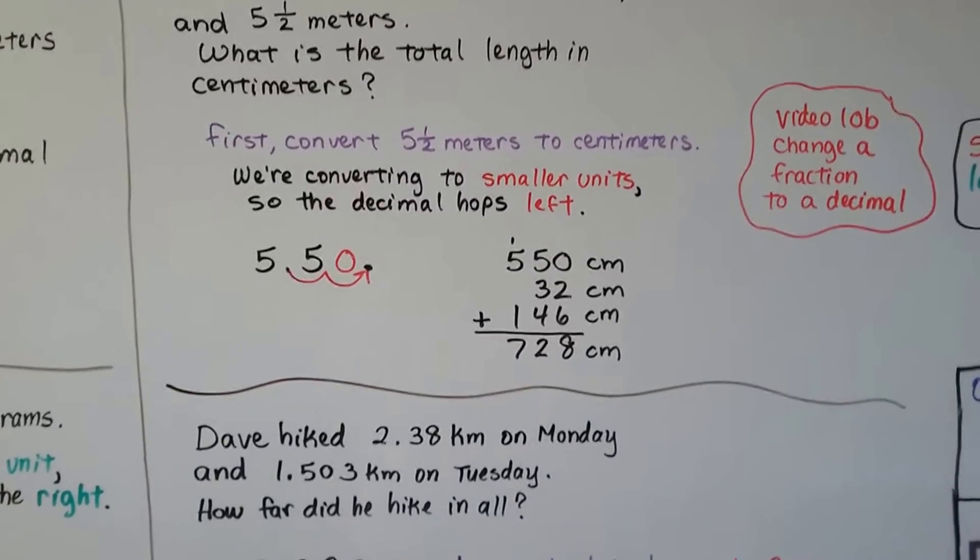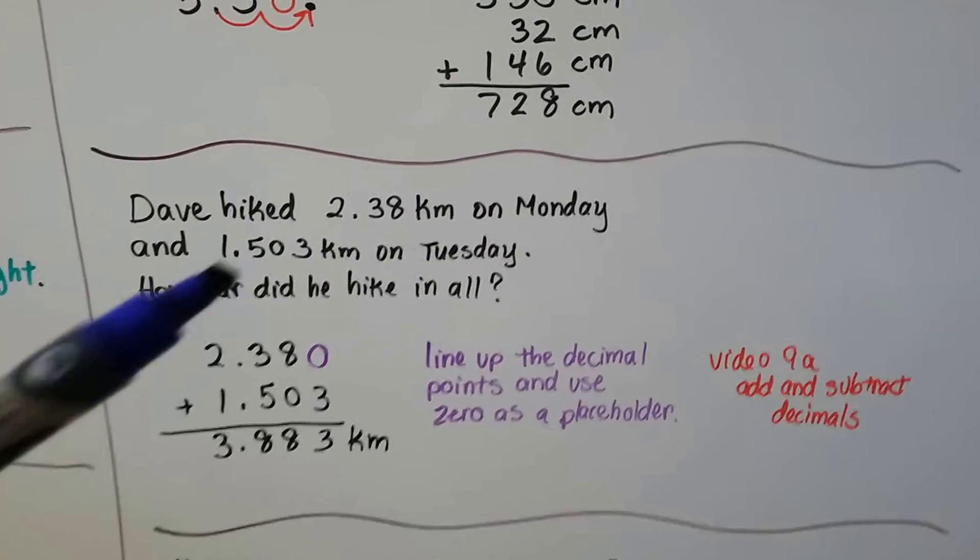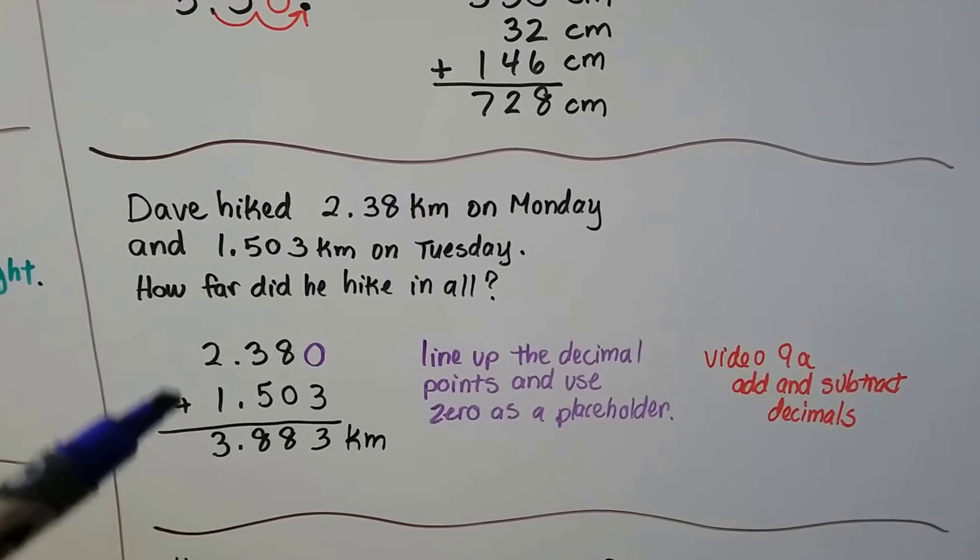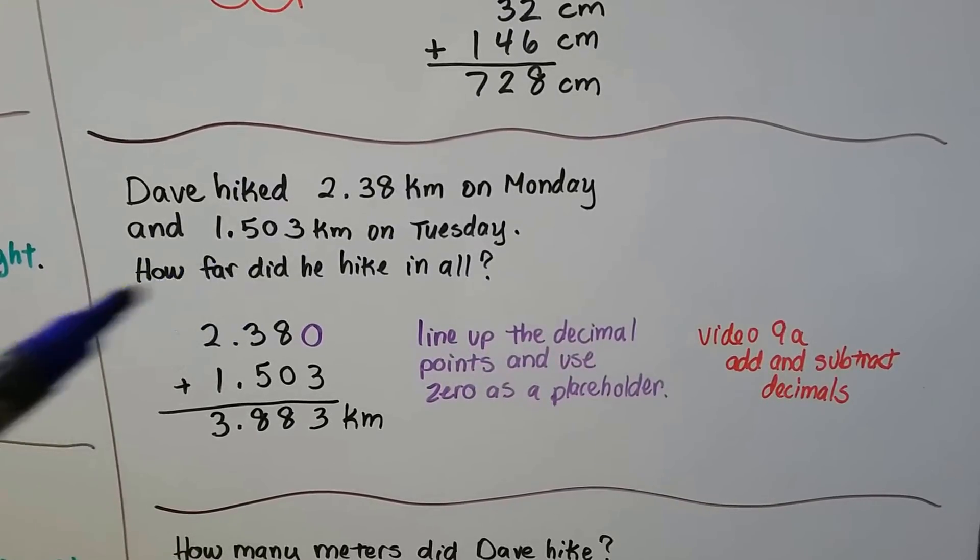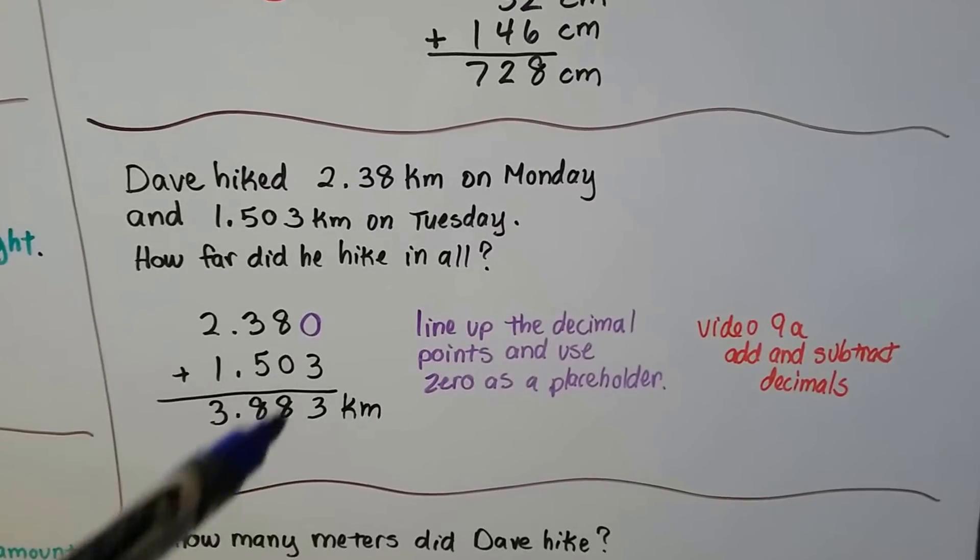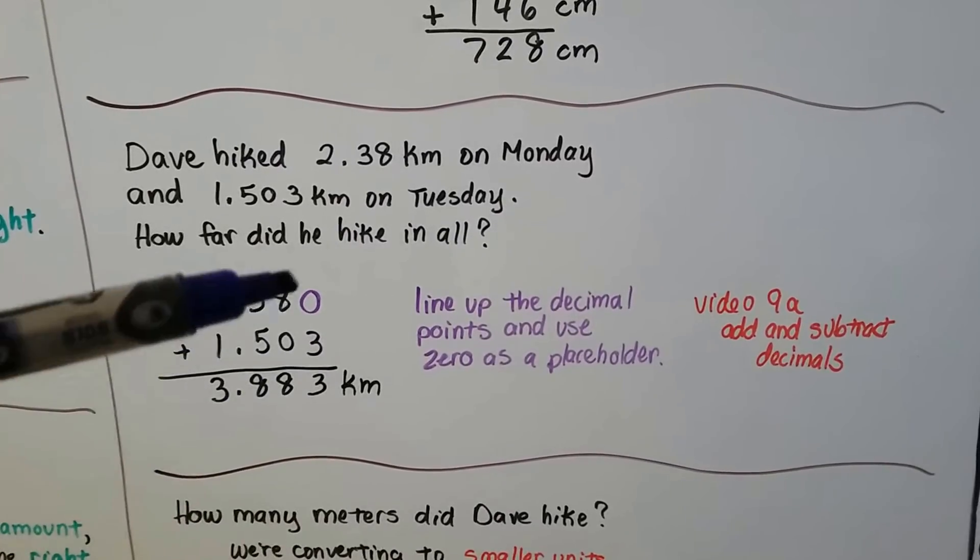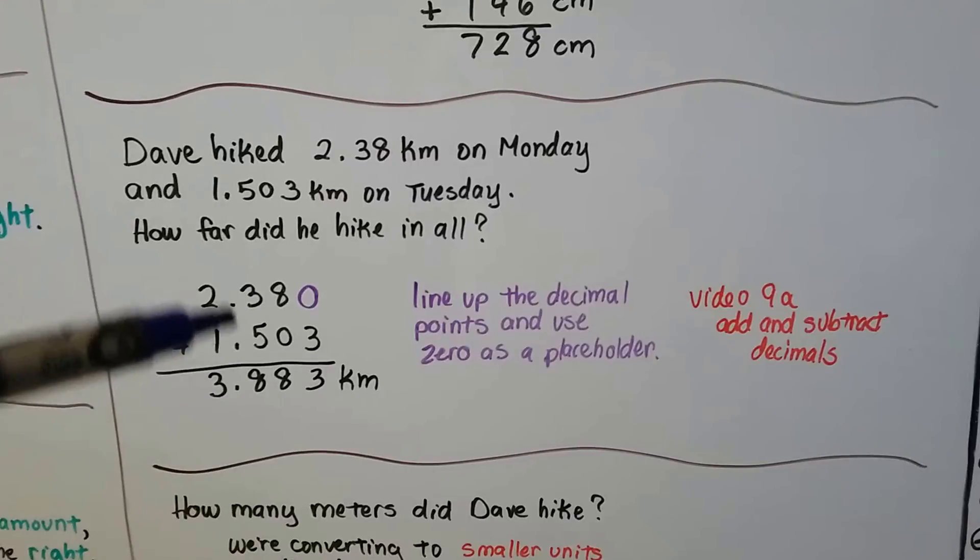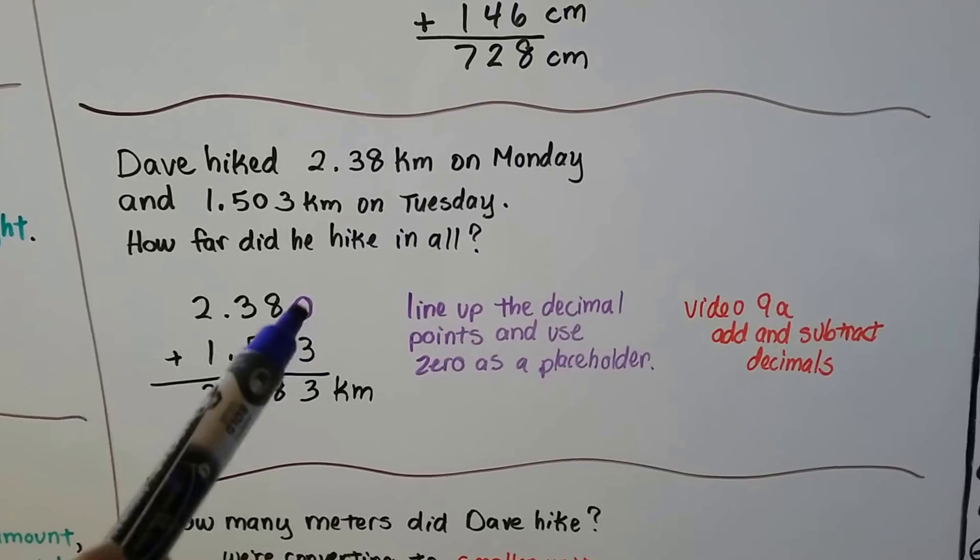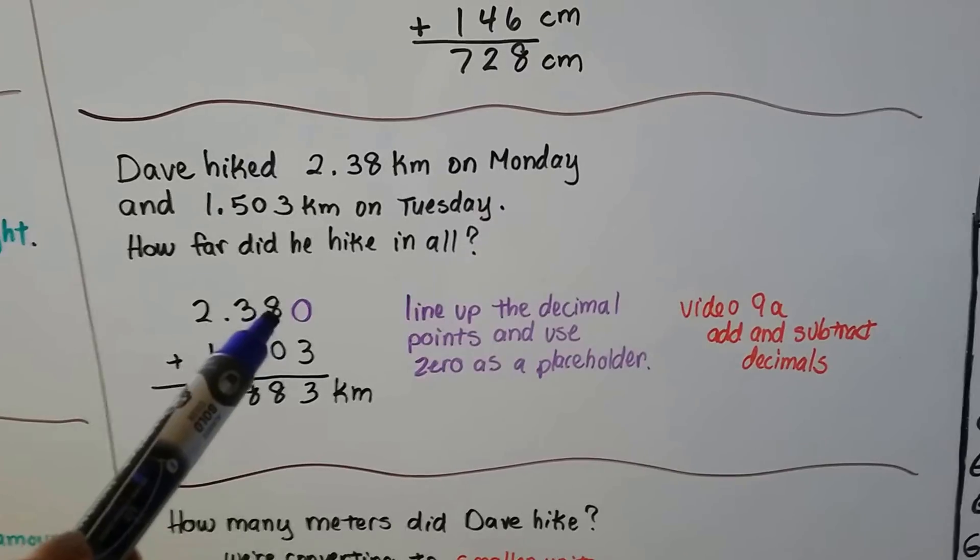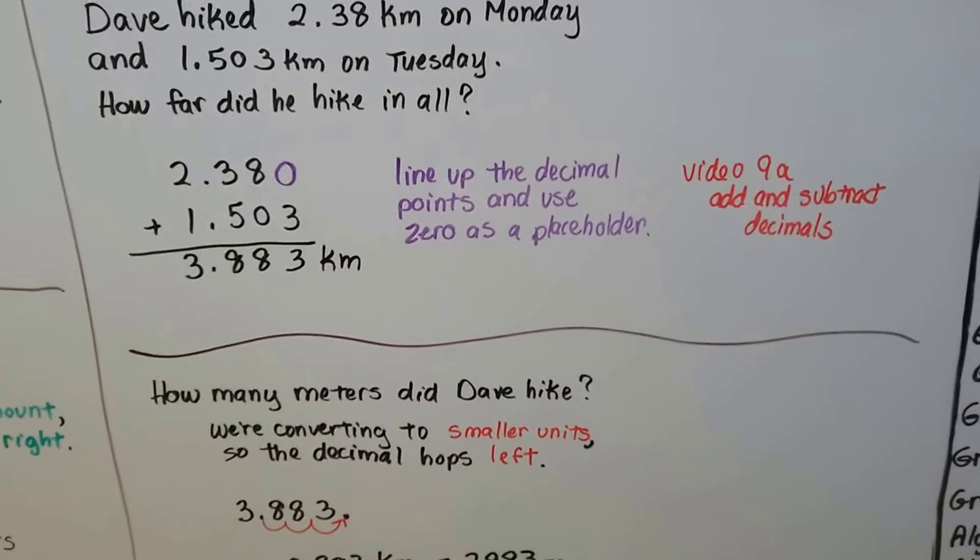There's a link to this video if you need it. We're going to be adding and subtracting decimals even though you might be converting them in a metric way. So Dave hiked 2.38 kilometers on Monday and 1.503 kilometers on Tuesday. How far did he hike in all? Well, this has more digits than this one, but we could put a zero as a placeholder. And we just add them up and we line the decimal point up nice and pretty. That was video 9a. We talked about adding and subtracting decimals and you can use a placeholder, a zero placeholder there if you need, if this was subtraction and we could regroup and borrow from the eight and turn that into a 10. That's if we were subtracting. So if you're confused about that, you need to go back to video 9a.